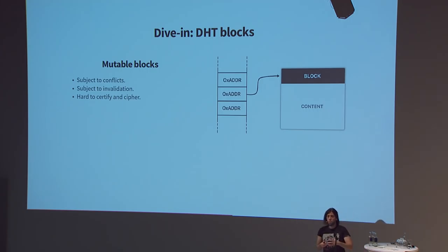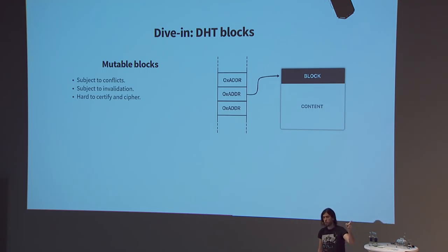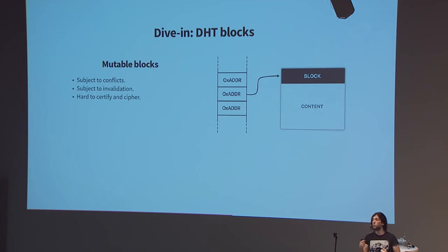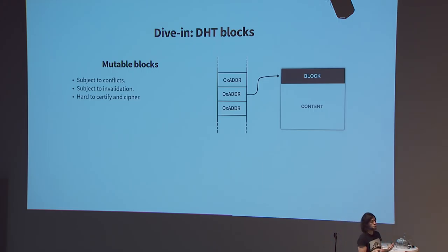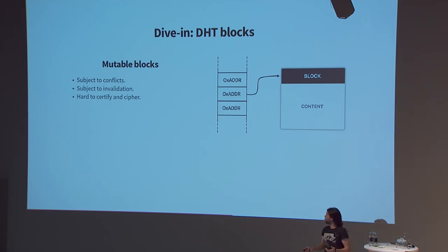Mutable blocks can also be hard to certify and cipher, because while you cipher the content so only authorized readers can access it, someone might add or remove read permissions over time, making it quite tricky. So mutable blocks are quite complex.